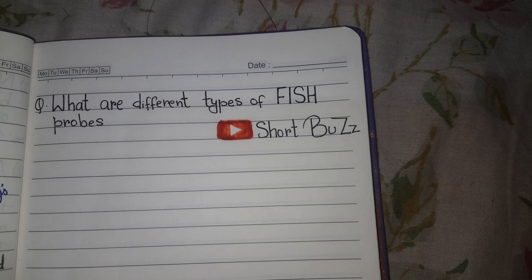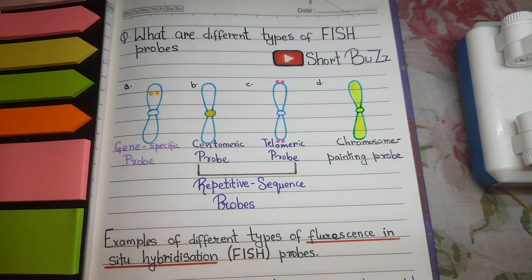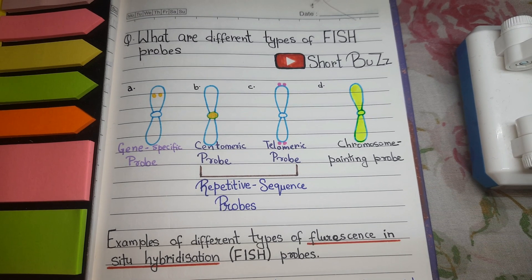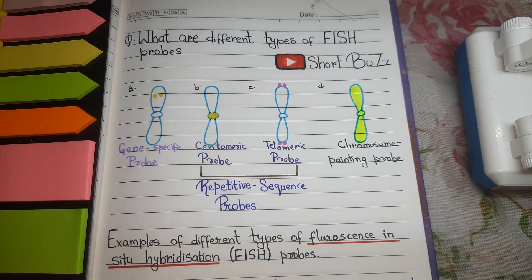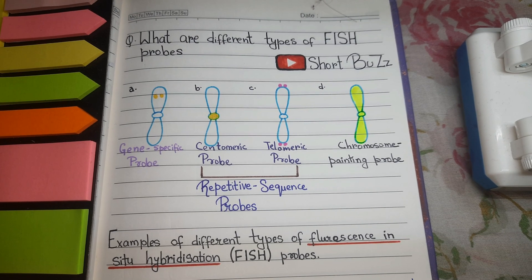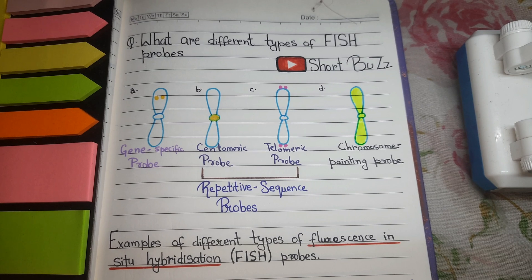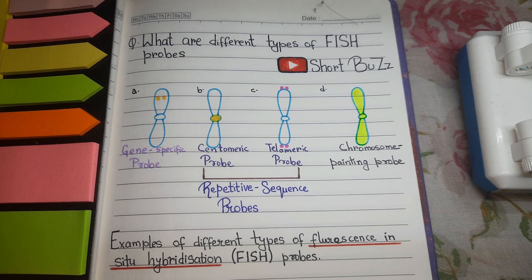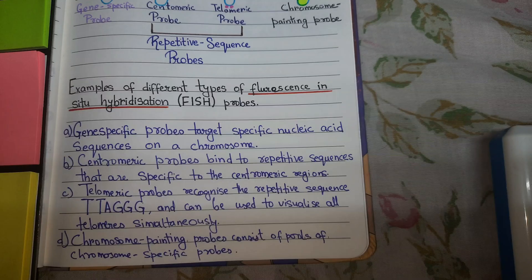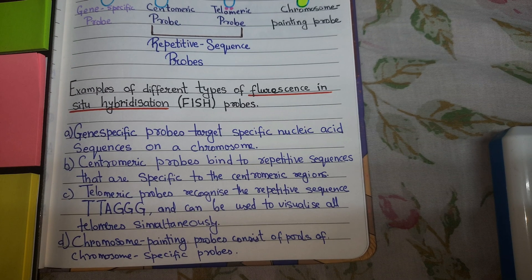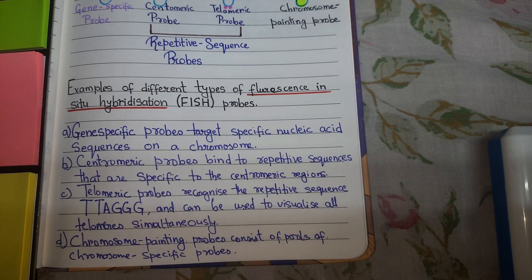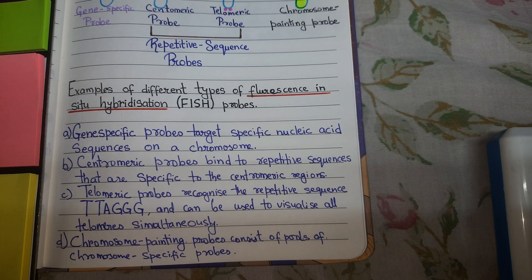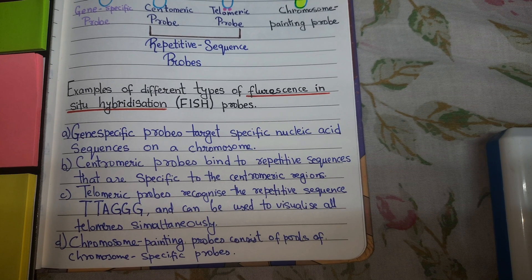Here is a representation of the different types of FISH probes. As you can see, the first one is a gene-specific probe, the second is a centromeric probe, the third is a telomeric probe, and the fourth is a chromosome painting probe. There are basically four types of FISH probes. The second and third — B and C — are repetitive sequence probes, as these sequences repeat often.